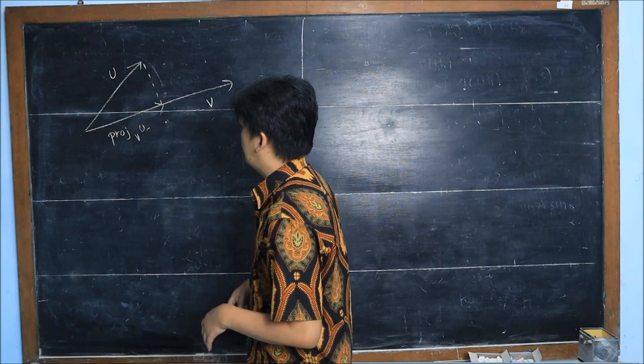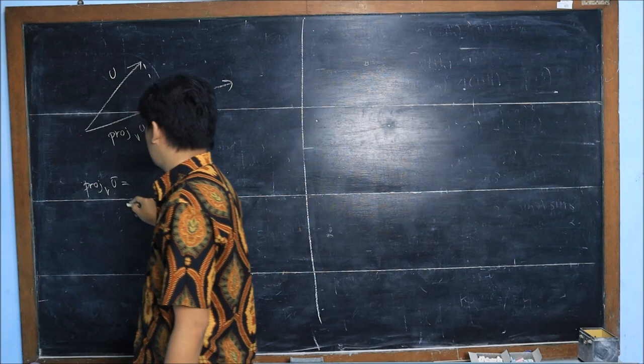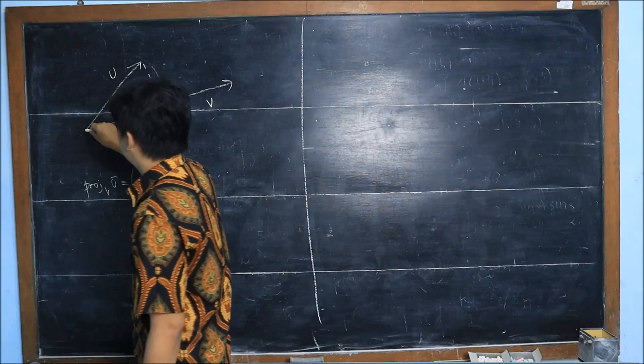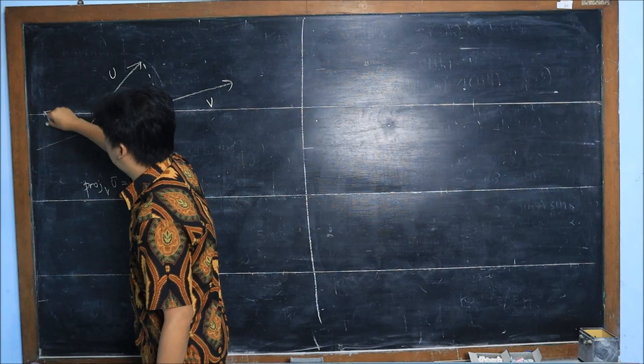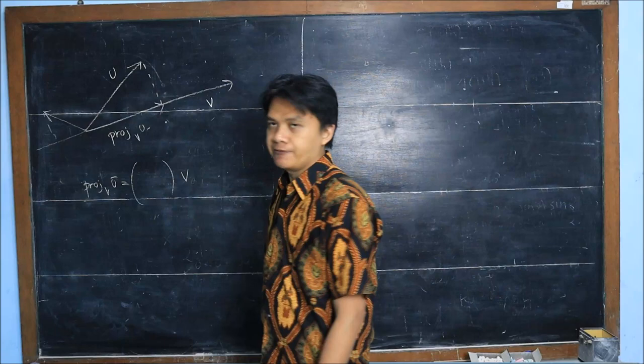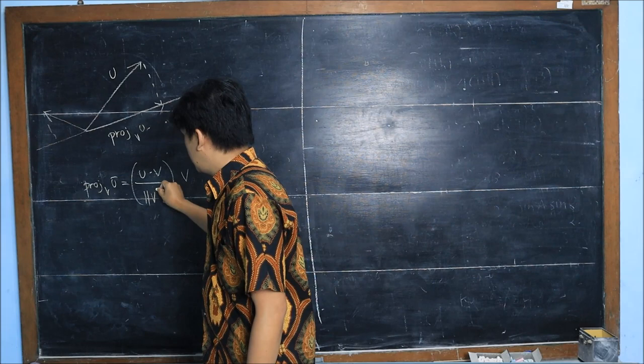The formula for this projection you can find in any standard textbook on linear algebra or even calculus. The projection of u onto v is basically a vector which is a multiple of v. For example, if u is there, then the projection from u to v is going to be a vector with direction opposite to v. In general, it is just a scalar times v, and the scalar can be obtained by taking the dot product of u and v and then dividing by the length of v squared.